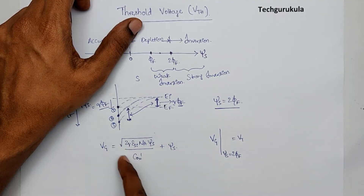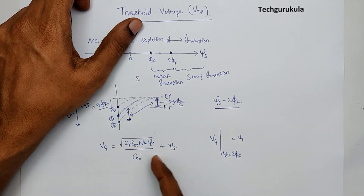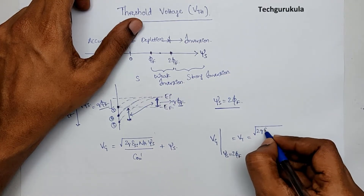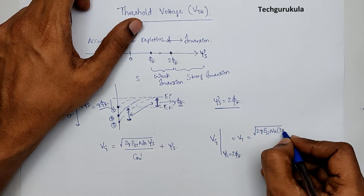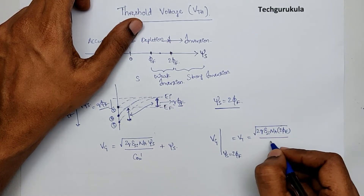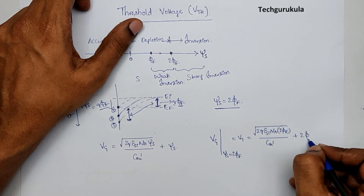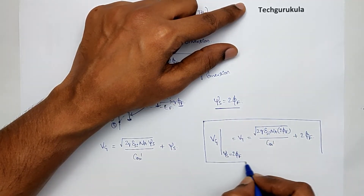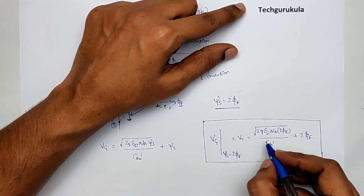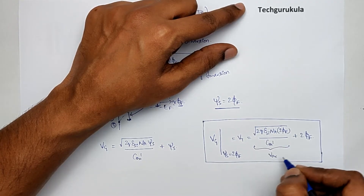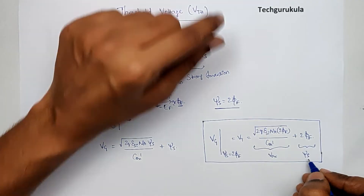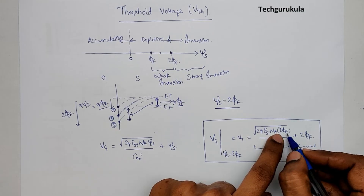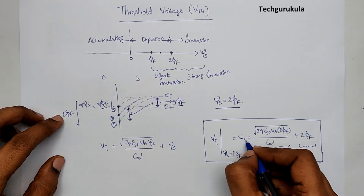We can write Vg at psi_s equal to 2*phi_f as the threshold voltage. Substituting psi_s equal to 2*phi_f: Vt is nothing but square root of (2*q*epsilon_si*N_a*2*phi_f) over C_ox_prime, plus 2*phi_f. This is the potential drop across the oxide, and the potential drop across the semiconductor is 2*phi_f. This is called the threshold voltage Vth.